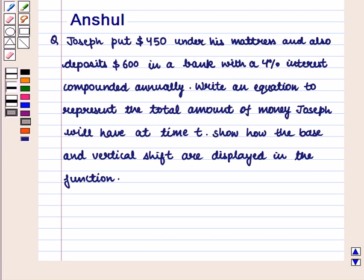Hello and welcome to the session. In this session we are going to discuss the following question. The question says that Joseph put $450 under his mattress and also deposits $600 in a bank with a 4% interest compounded annually. Write an equation to represent the total amount of money Joseph will have at time t.